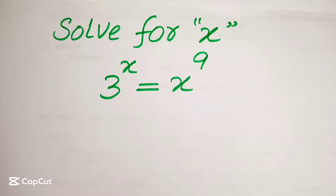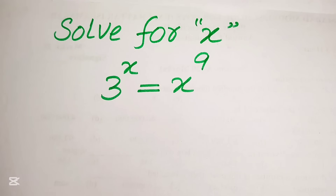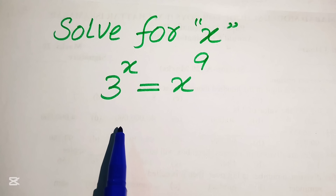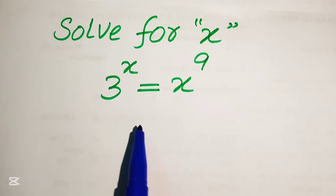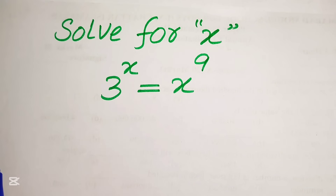Hello everyone, welcome to solve this nice math algebra problem. Here we have 3 to the power of x equals to x to the power of 9, and we will solve this problem for the values of x.